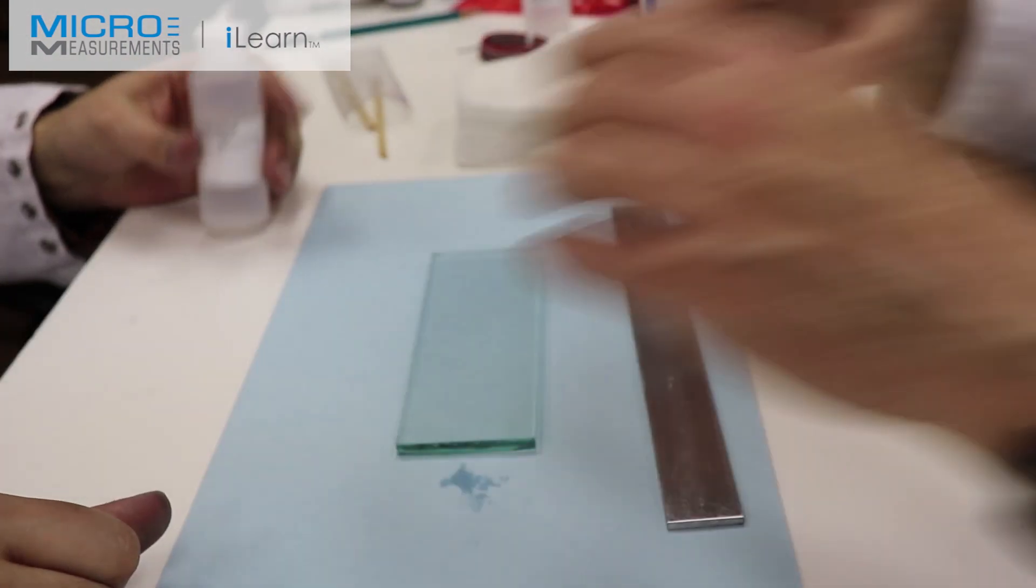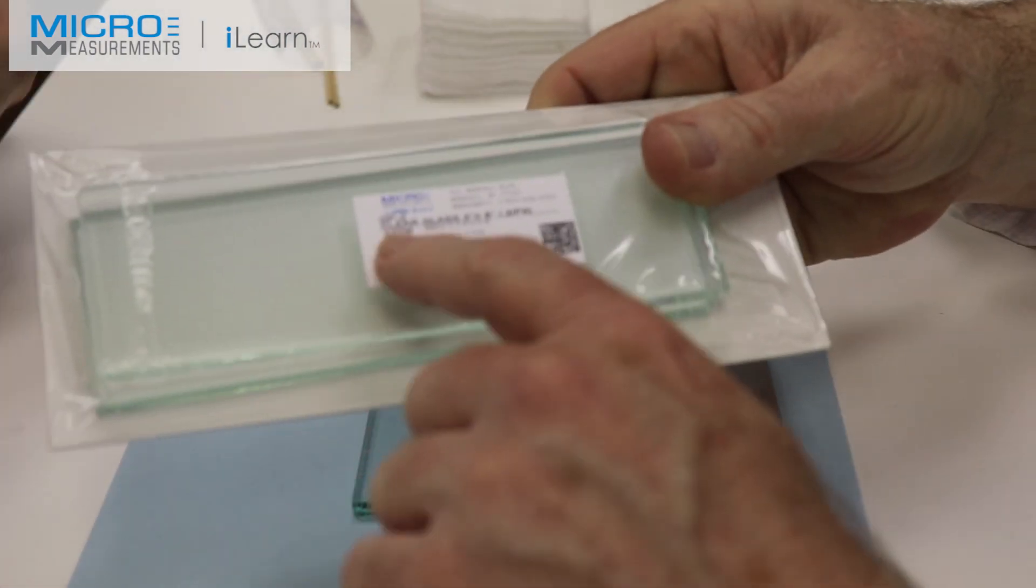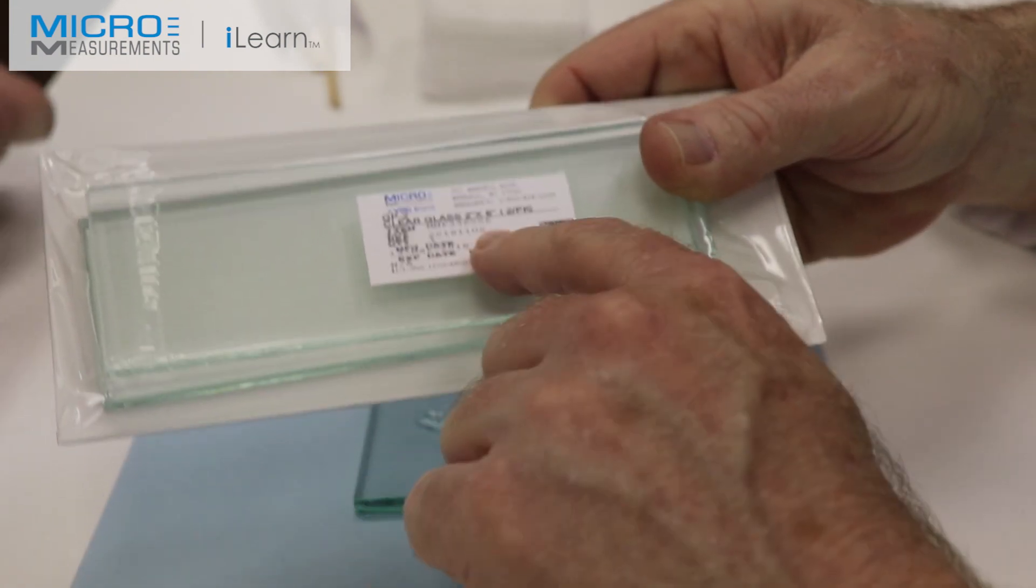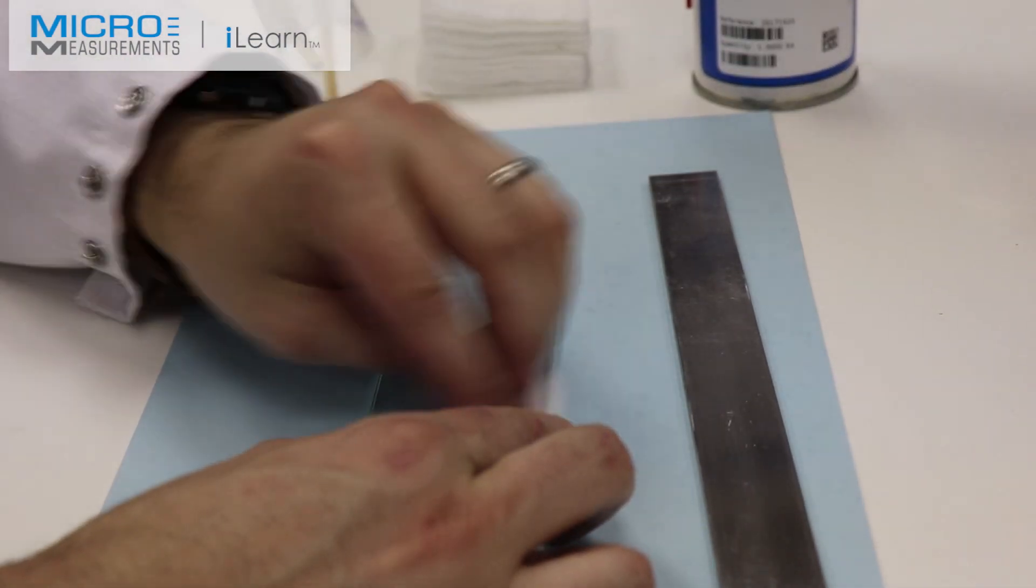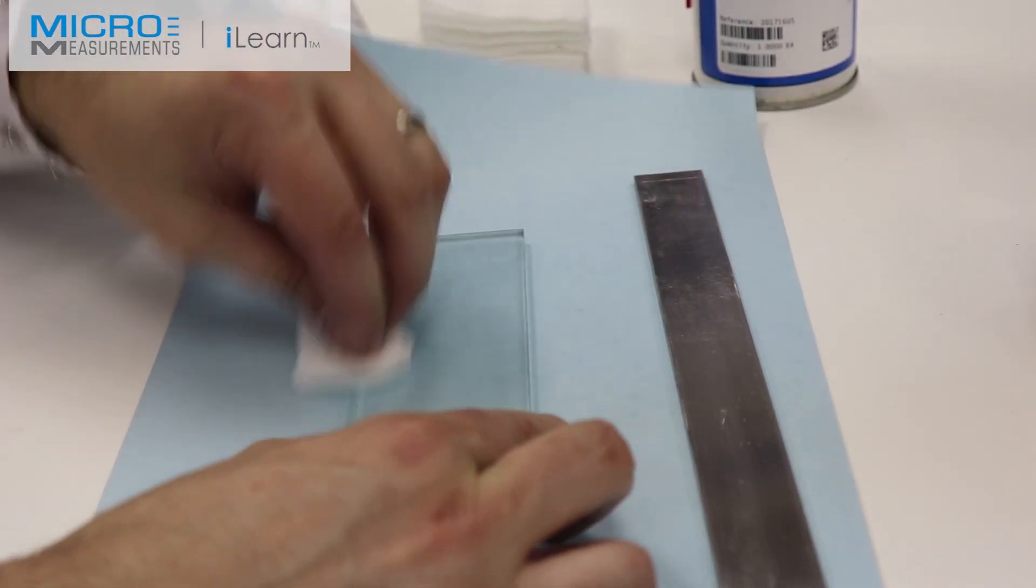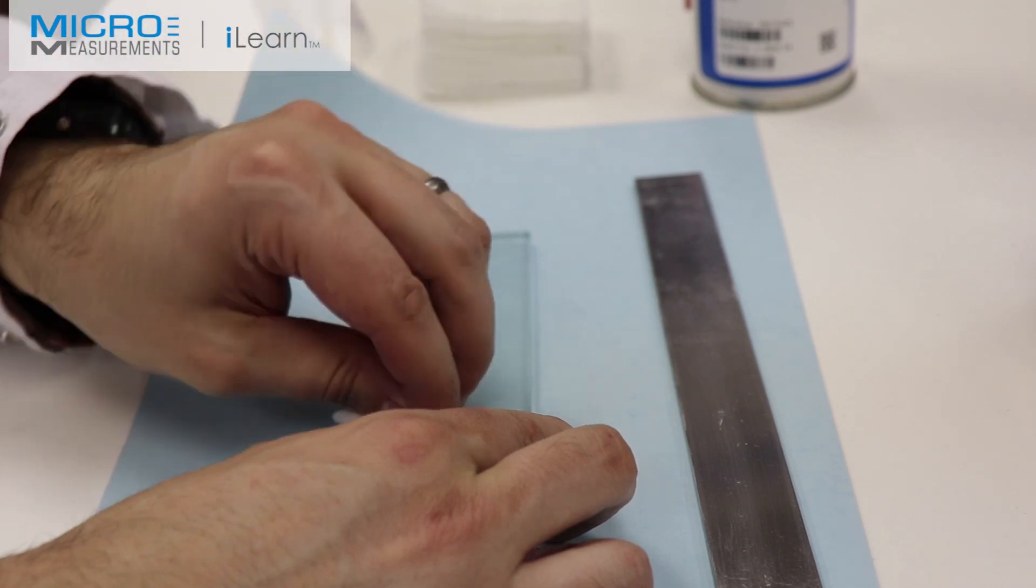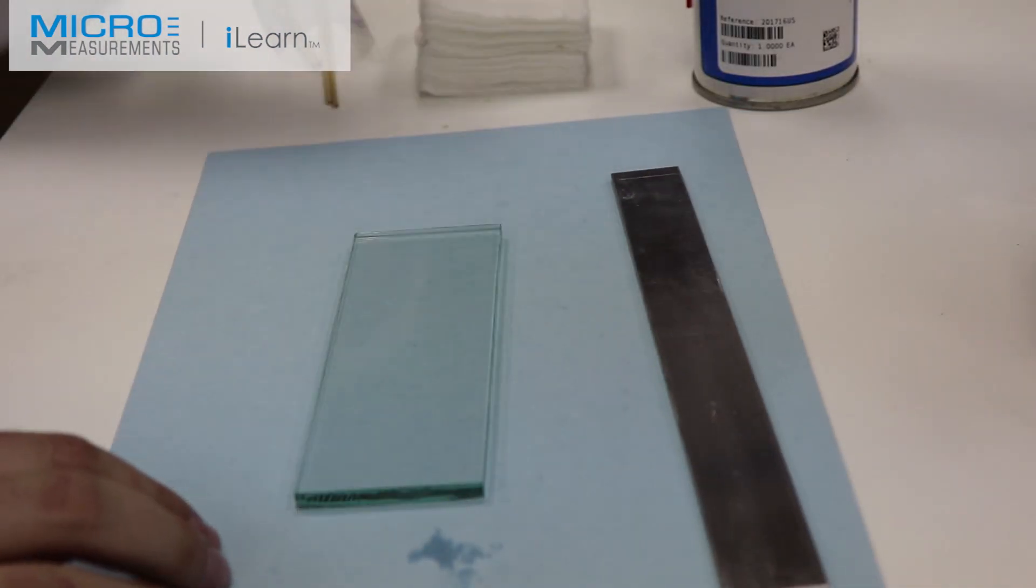He's going to take a clean glass plate, and by the way, that's now a product. We sell the GP2 clear glass plates if you don't have one in your facility. Glass plates make an excellent staging area for your gauge that's unbonded. It's easy to clean, and it's easy to identify if it's dirty.